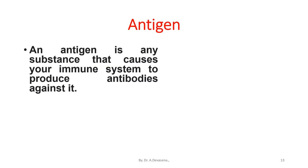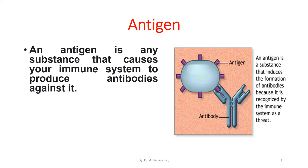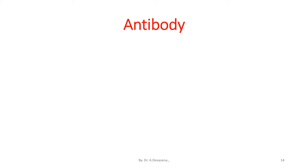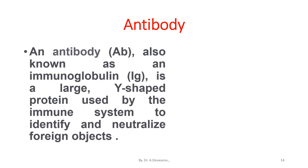An antigen is any substance that causes your immune system to produce antibodies against it. Here is a representation of an antigen and antibody. This antigen induces the formation of antibodies because it is recognized by the immune system as a threat. This means your immune system does not recognize the substance and is trying to fight it off. An antibody, also known as an immunoglobulin, is a large Y-shaped protein used by the immune system to identify and neutralize foreign objects.